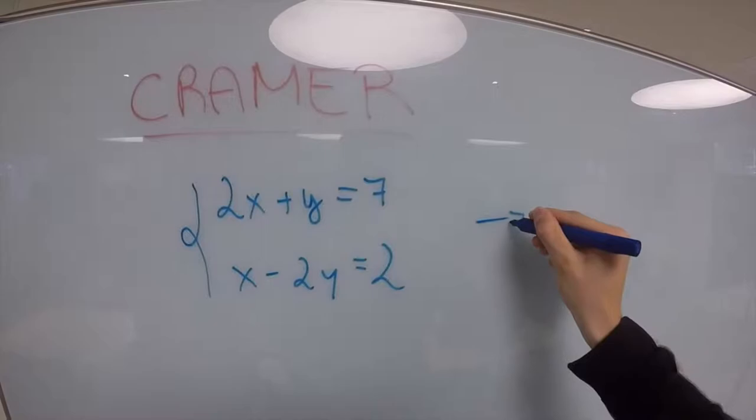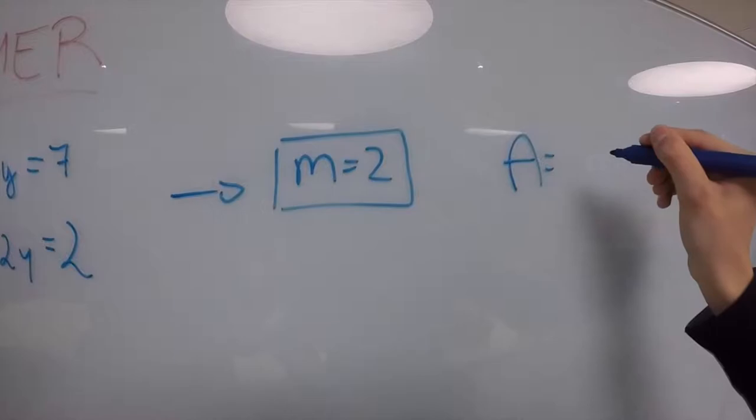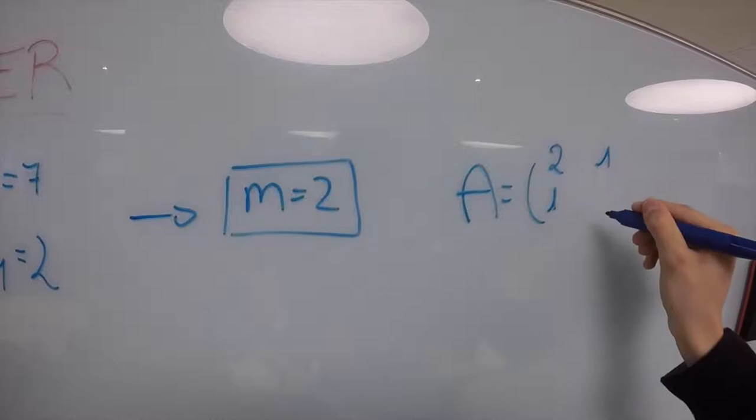So, our matrix is equal to 2, 1, 1 and minus 2.